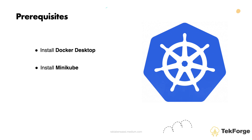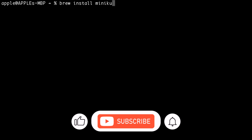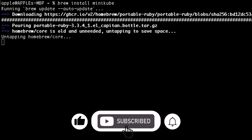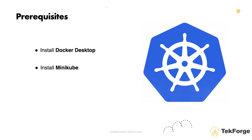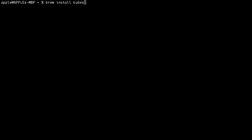You also need to install Minikube. If you have a MacBook Pro just like me, you can do it by running the command: brew install minikube. Next, you need to install the Kubernetes command line interface, kubectl, to interact with your Minikube cluster. On MacBook, you can install it using the following command: brew install kubectl.